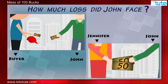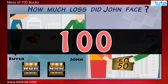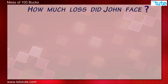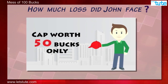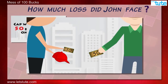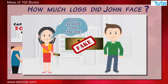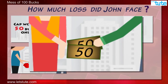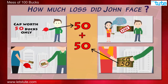Or are we still going wrong somewhere? Some might be thinking it's a loss of 150 and some would say it's 200. But what if I say it's a loss of 100 only? John just had a cap worth 50 bucks and nothing else. When he sold the cap, he was left with 50 bucks in his pocket. When Jennifer asked for the real note, John had to arrange only 50 bucks as he already had 50 from the cap he sold. So actually, he lost his cap worth 50 bucks and 50 which he arranged.